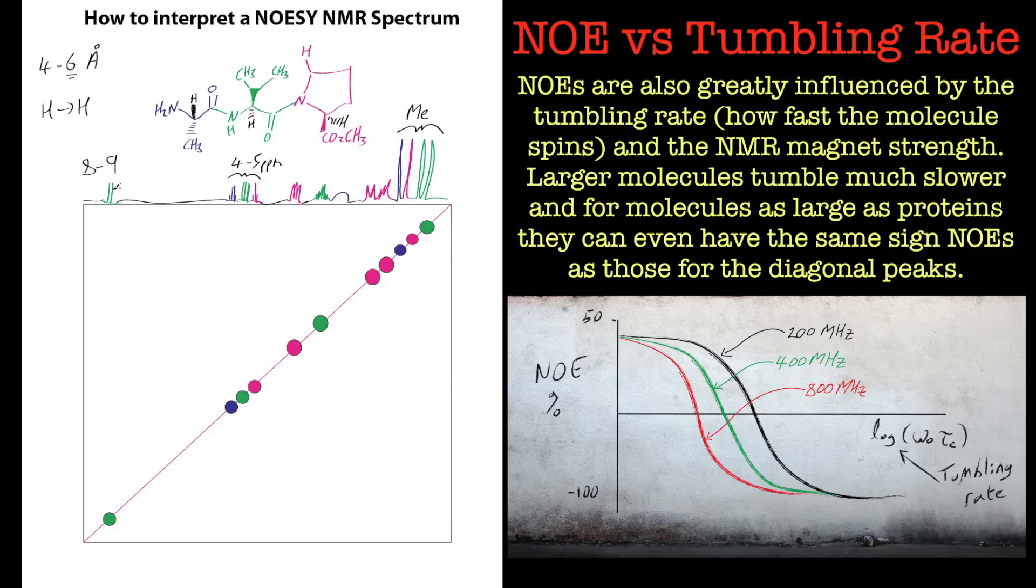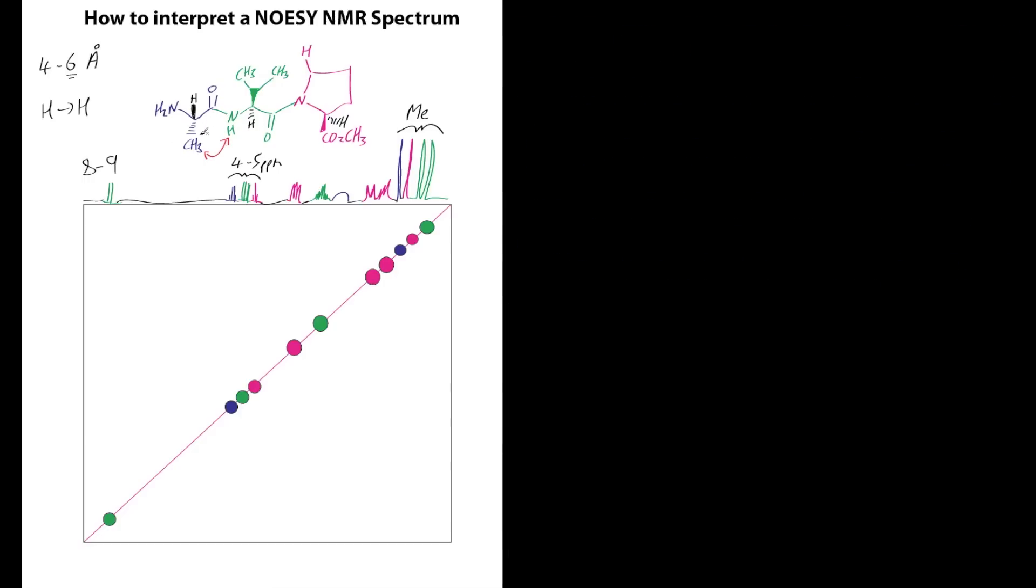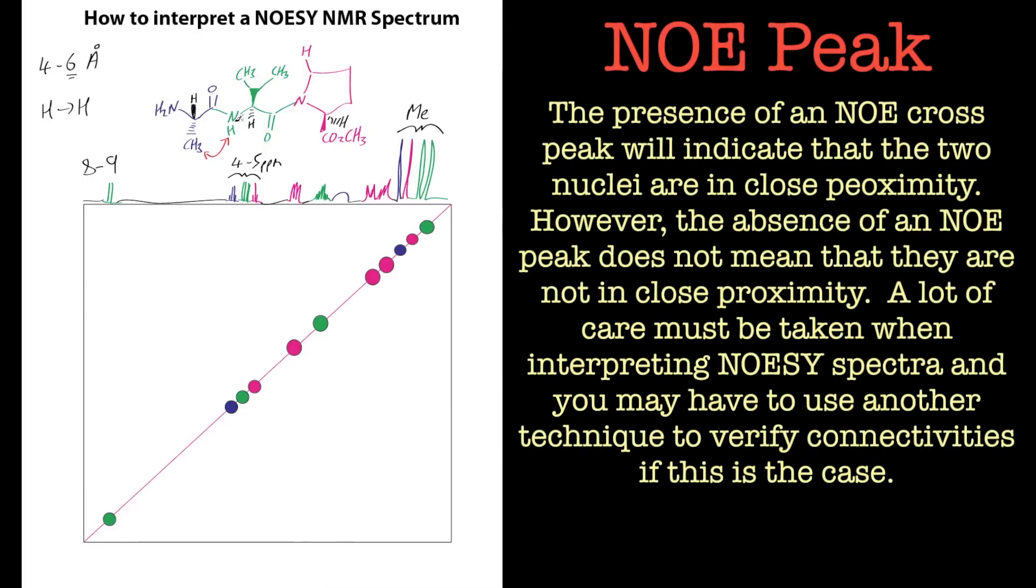If we look to this NOESY spectrum for this signal here, if it's the right structure, we should see a through space interaction between that CH3 group and that NH group. If that is present, that means this valine unit is connected to this alanine unit. If we don't see that, it doesn't necessarily mean it's not connected, but if we do see it, it means it is connected. That's really important because these interactions are what's called anisotropic, they will not be identical. They're asymmetric.